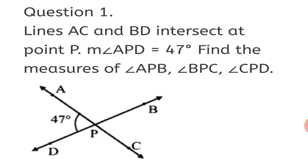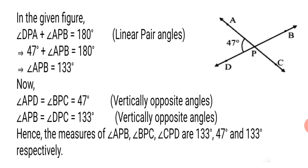First, we will find the measure of angle APB using the property of angles in a linear pair with angle APD. In the given figure, angle DPA plus angle APB equals 180 degrees — reason: angles in a linear pair. Substituting the value of angle DPA as 47 degrees: 47 degrees plus angle APB equals 180 degrees. Subtracting 47, we get angle APB equals 133 degrees.